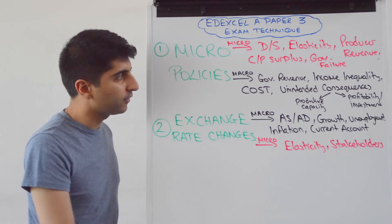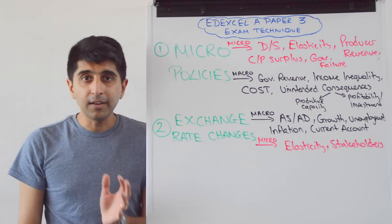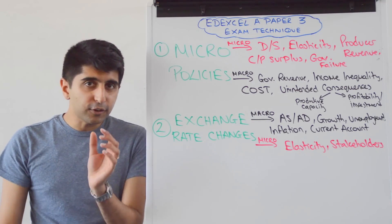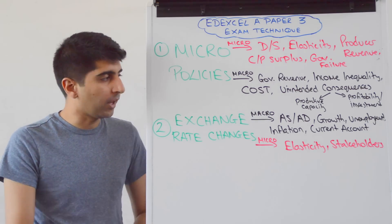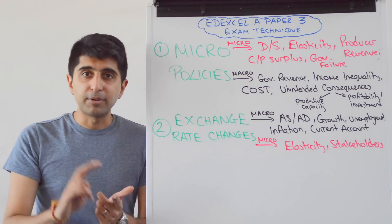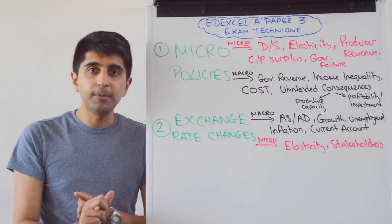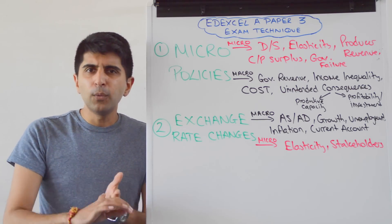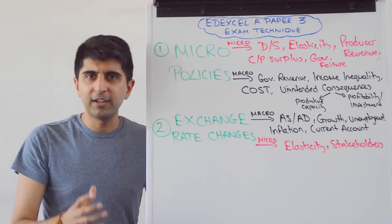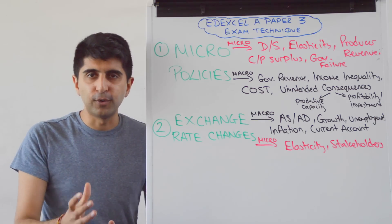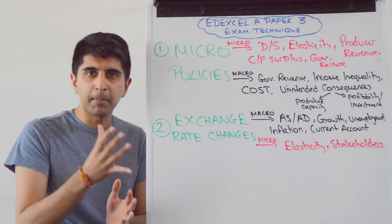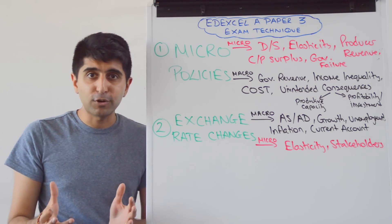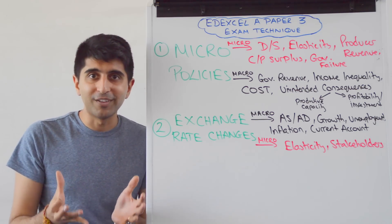No problem whatsoever. So nice examples there for you to look at. Let's look at two more examples now — protectionist policies being adopted, and a macro policy like fiscal policy too. Let's see how we can look at micro and macro effects for those two.